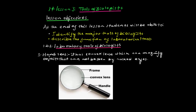Laboratory tools of biologists. What are the laboratory tools of biologists? These are tools that can be used in the laboratory. This is a hand lens — it has a convex lens which can magnify objects that cannot be seen by the naked eye.